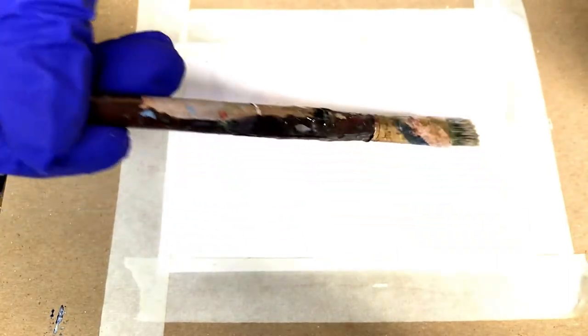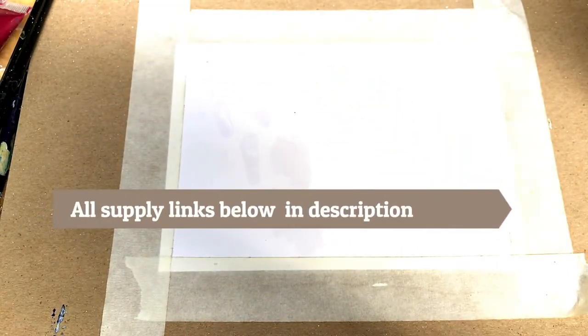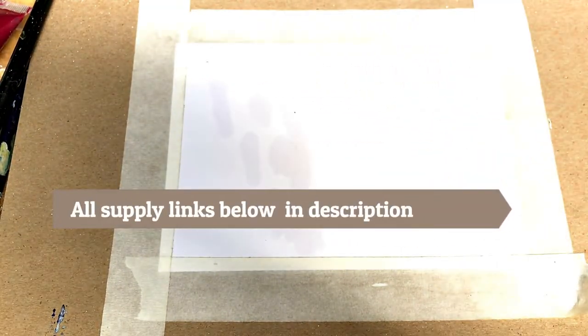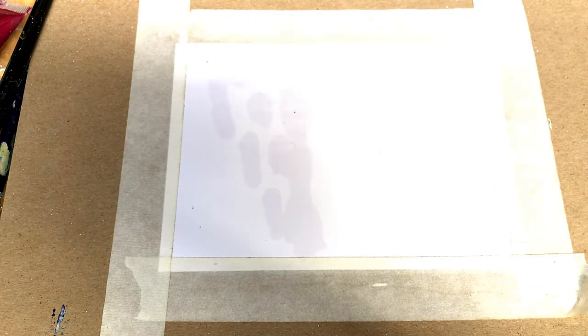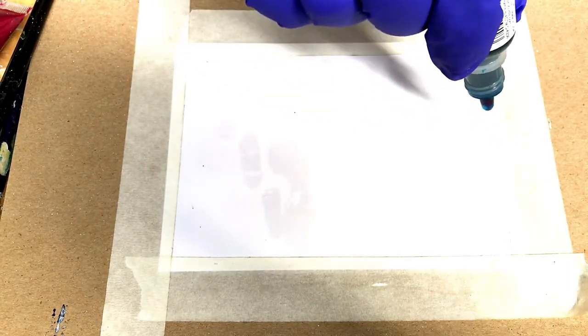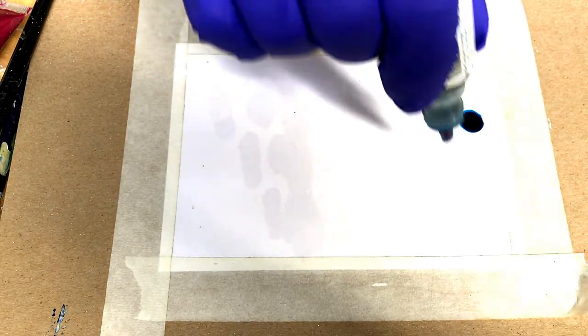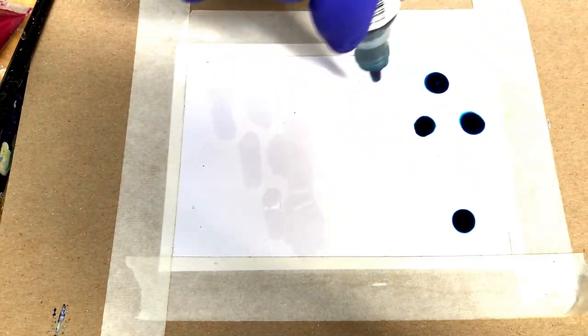Yupo paper which I'm wetting down with alcohol to make the alcohol ink flow better, because otherwise they'll just kind of be stuck as blobs and it doesn't actually move. I taped it down so it doesn't go all over the place.